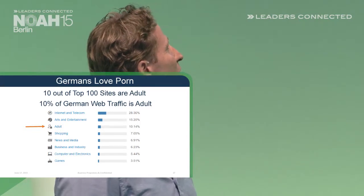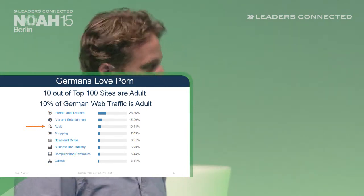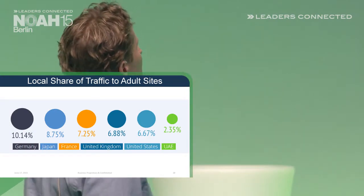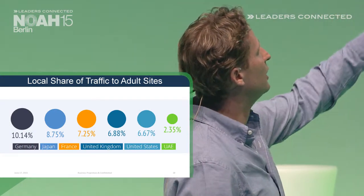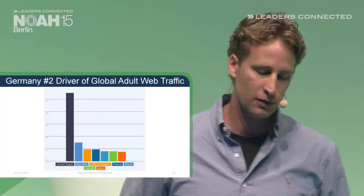I want to finish with this very nice thing we found — Germans love porn. How much? A lot. 10% of all traffic in Germany is on adult websites, and 10 out of the top 100 websites in Germany are adult. Comparing to other countries: the United Kingdom is at 6.8%, while the United States is only 6.6% of all traffic going to adult. Looking worldwide at who is sending traffic to adult websites, the United States is on top, but Germany holds a very strong number 2 position, sending adult traffic around the world.